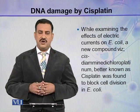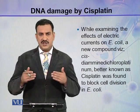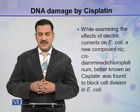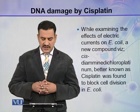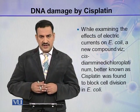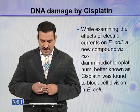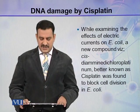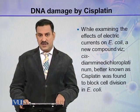Cisplatin is a compound which can make crosslinks in DNA. While examining the effects of electric currents on E. coli, a new compound, cisdiamine dichloroplatinum, better known as Cisplatin, was found to block cell division in E. coli.